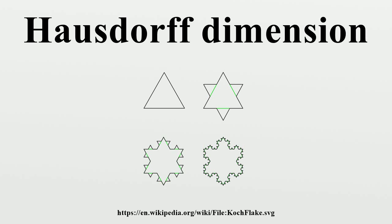Applying its mathematical formalisms provides that the Hausdorff dimension of a single point is zero, of a line is one, of a square is two, and of a cube is three. For sets of points that define a smooth shape or a shape that has a small number of corners — the shapes of traditional geometry and science — the Hausdorff dimension is a counting number agreeing with the dimension corresponding to its topology.